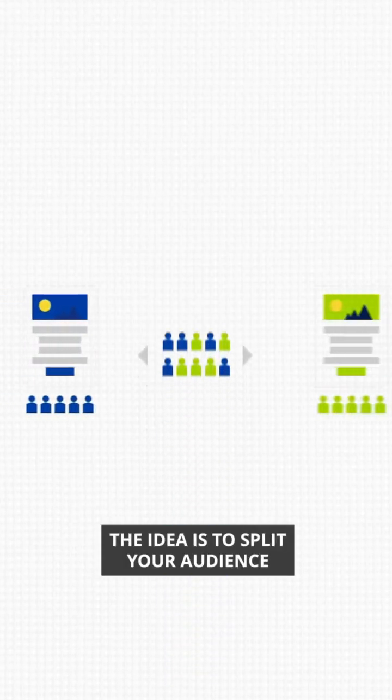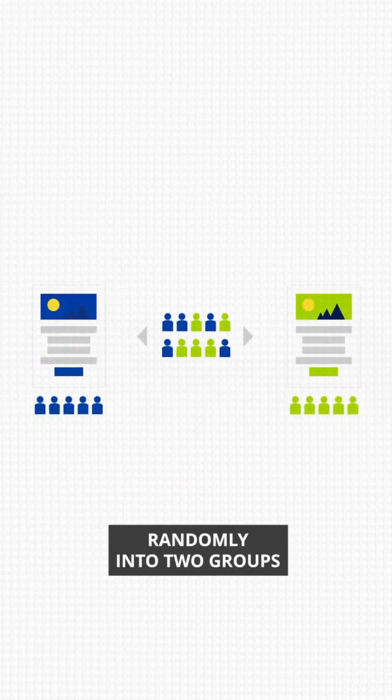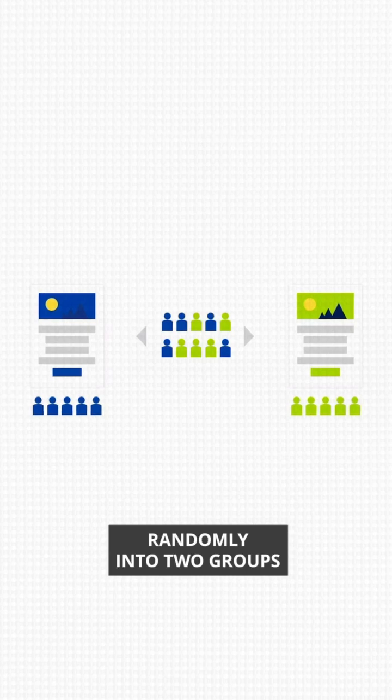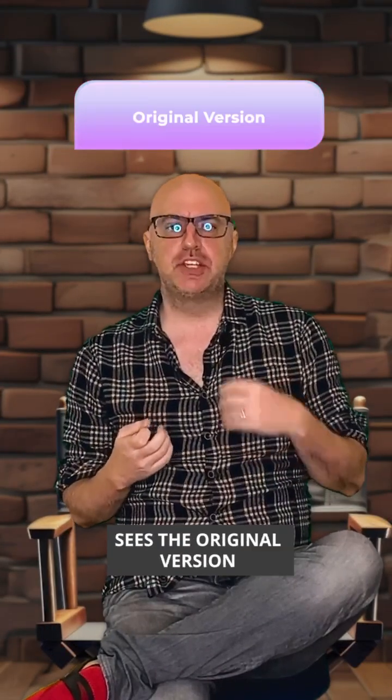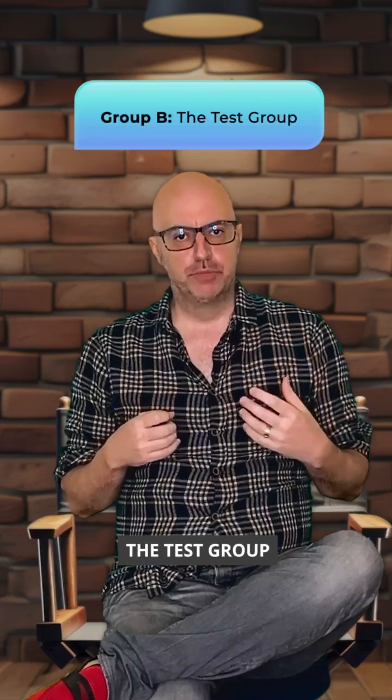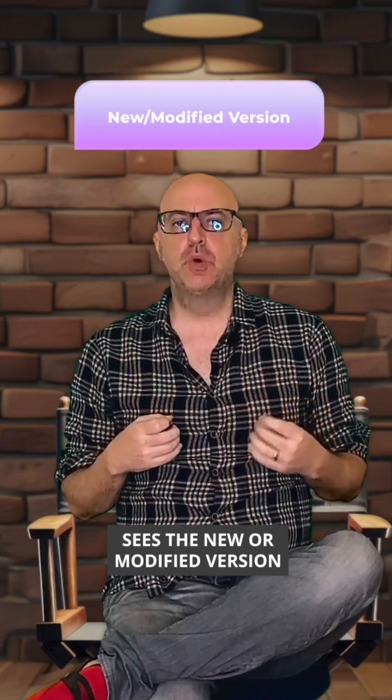The idea is to split your audience randomly into two groups. Group A, the control group, sees the original version, while Group B, the test group, sees the new or modified version. By tracking how each group responds, you can measure the impact of the change.